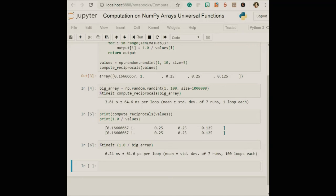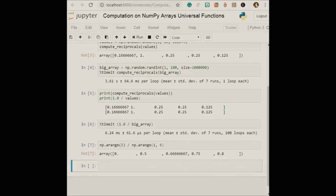So vectorized operations in NumPy are implemented via ufuncs, whose main purpose is to quickly execute repeated operations on values in NumPy arrays. Ufuncs are extremely flexible. Before we saw an operation between a scalar and an array, but we can also operate between two arrays like this: np.arange 5, np.arange 1,6. So we got the output 0, 0.5, 0.66667, 0.75, 0.8. And ufuncs operations are not limited to one-dimensional arrays; they can act on multi-dimensional arrays as well. x equals np.arange 9 .reshape.